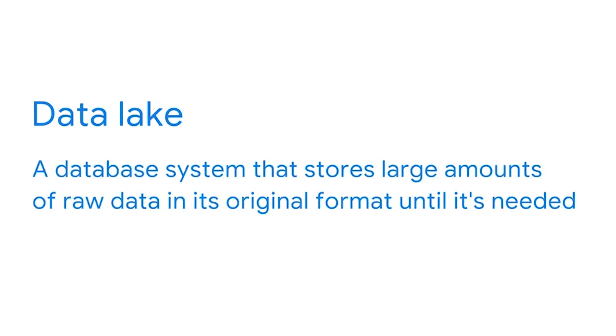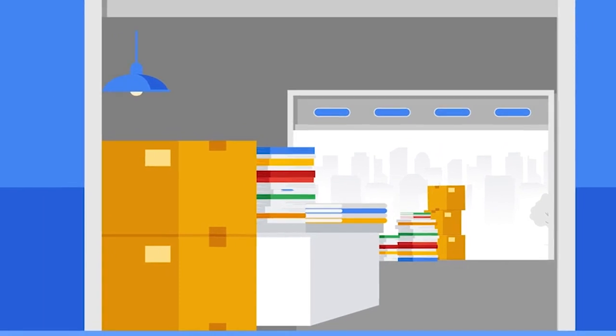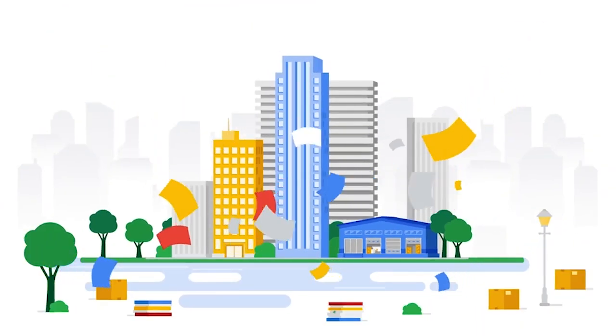A data lake is a database system that stores large amounts of raw data in its original format until it's needed. This makes the data easily accessible because it doesn't require a lot of processing. Like a data warehouse, a data lake combines many different sources. But data warehouses are hierarchical with files and folders to organize the data, whereas data lakes are flat — the data has been tagged so it is identifiable, but it's not organized. Data lakes don't require the data to be transformed before storage, so they are useful if your BI system is ingesting a lot of different data types.